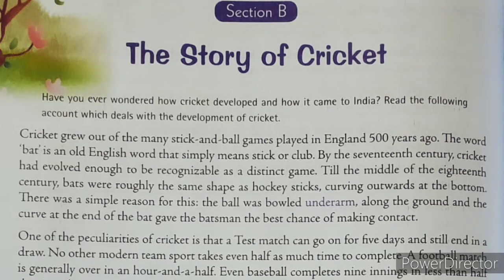Let us understand the first part of this chapter. In the first few paragraphs we know how cricket developed and what are the oddities in this sport. The first information we get is about cricket's history — cricket grew out of many stick and ball games played in England 500 years ago. The word 'bat' is an old English word that simply means stick or club. By the 17th century, cricket had evolved enough to be recognizable as a distinct game.